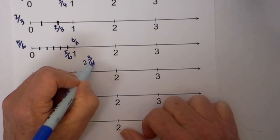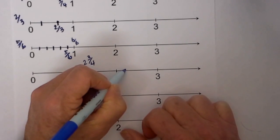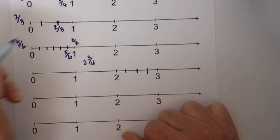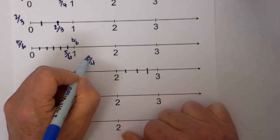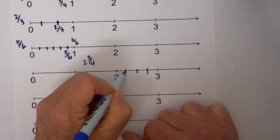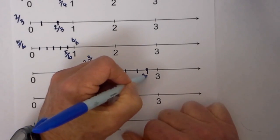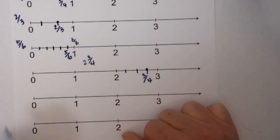We know we divide according to the denominator, 4 spaces, so we have 1, 2, 3, 4. And then the numerator tells us how many spaces to go over, 1, 2, 3. So this will be 2 and 3 fourths.